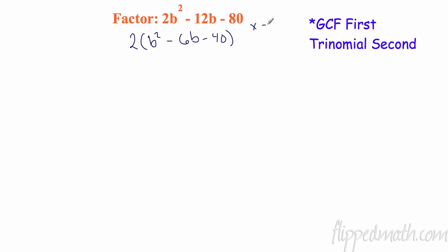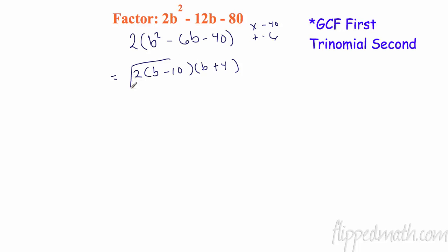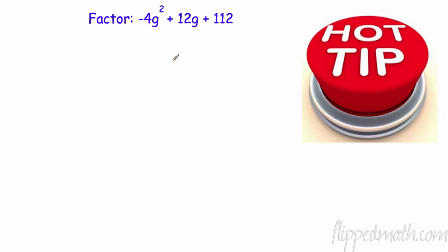Now I need to factor what's inside. I have to find two numbers that multiply to 1 times negative 40, which is negative 40, and add to negative 6. We know the next step is going to be b in the front, and since we have a leading factor of 1, I don't need to divide by 1. Two numbers that multiply to negative 40 and add to negative 6: negative 10 times positive 4 equals negative 40, and negative 10 plus 4 equals negative 6. Quick check: b times b is b squared, negative 10 times 4 is negative 40. There you have it — double factored.